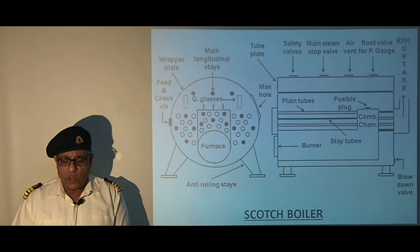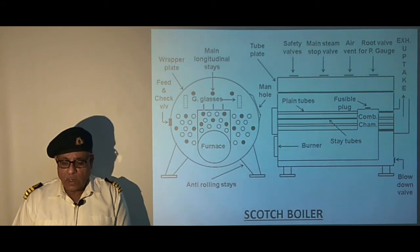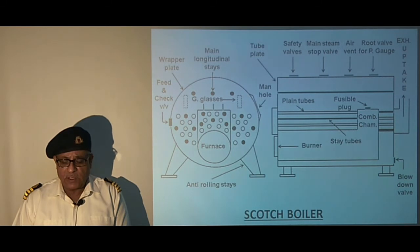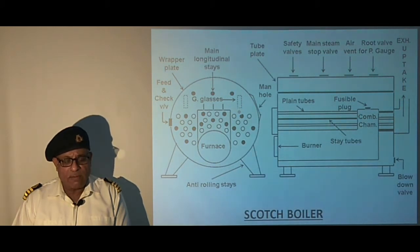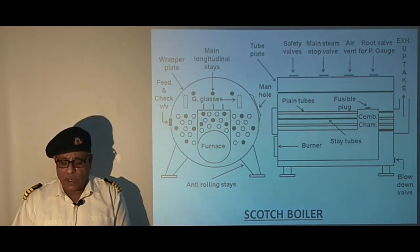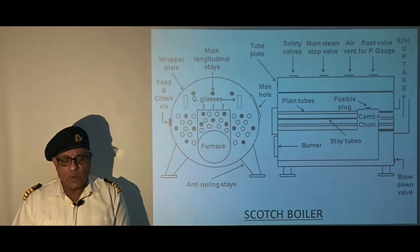Gauge glasses are mounted on the front tube plate, and their bottom connection is a minimum of 5 inches above the top of the combustion chamber. The crown of the combustion chamber is fitted with a fusible plug to prevent damage to the tubes due to shortage of water.